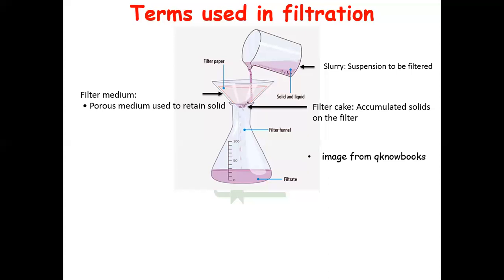The filter cake is the accumulated solid on the filter paper or on the filter medium — the accumulated solids are called the filter cake. Lastly, the filtrate is the clear liquid which we obtain when the slurry is passed through the filter medium.